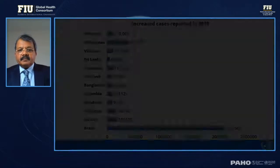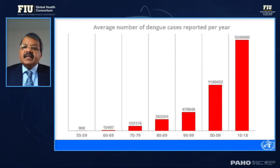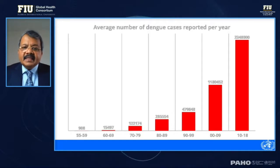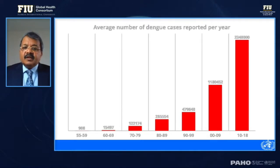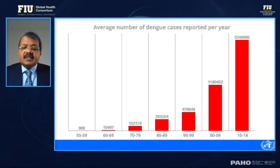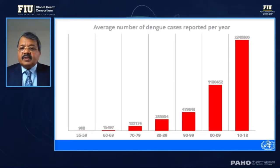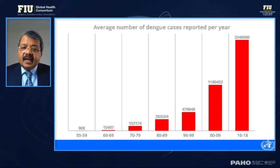To sum up where dengue stands today: a Lancet paper stated that dengue is the only communicable disease to have increased exponentially — almost fourfold since 2000. This graph illustrates the significant increase from 2000 onwards. Starting from the 1970s when only 7 countries were affected, we now have almost 129 countries affected with dengue. This graph shows the yearly average of dengue cases per decade, and it is a shocking picture of where dengue is today.